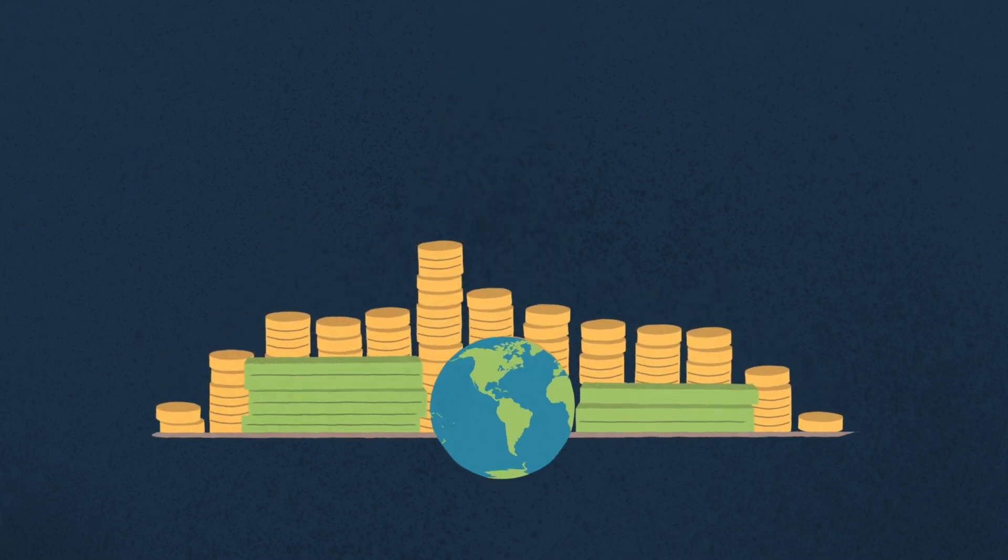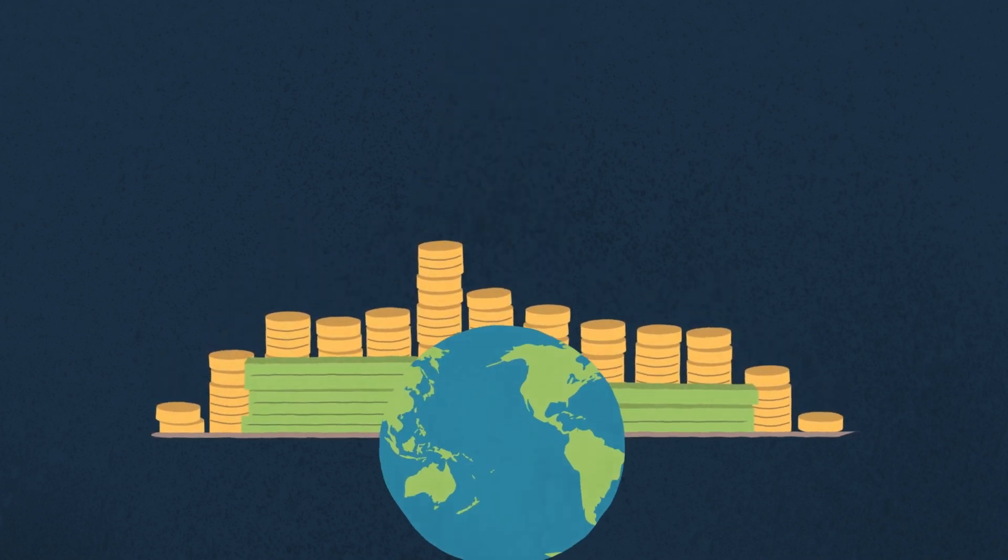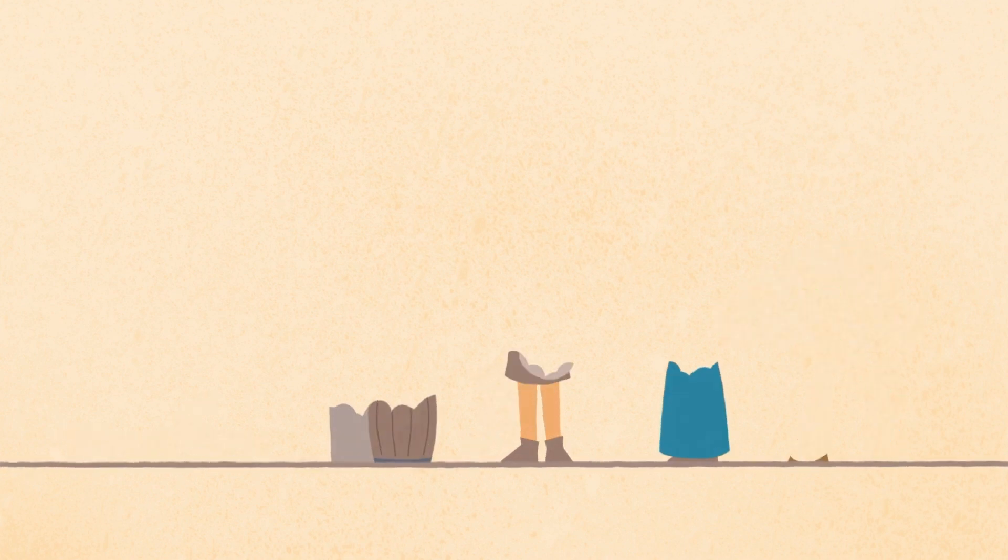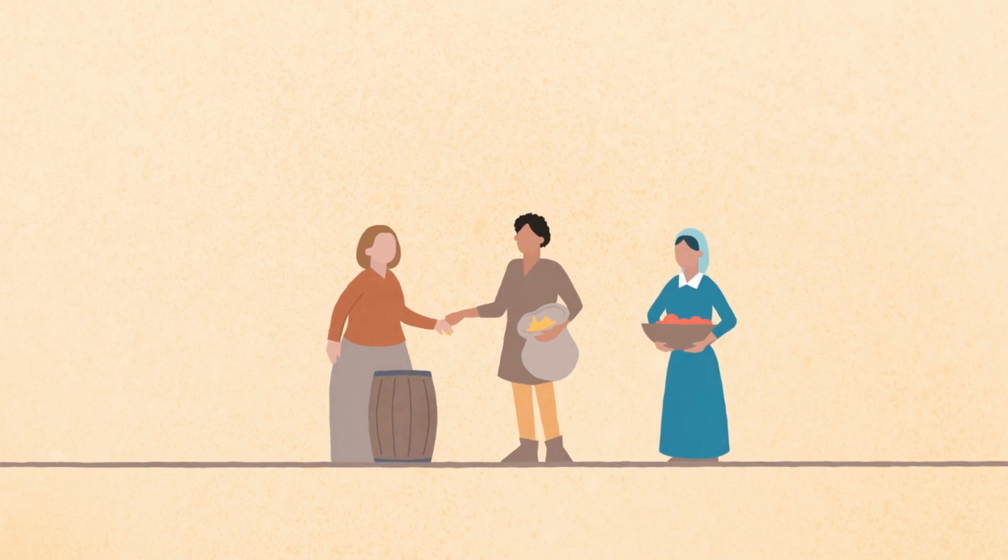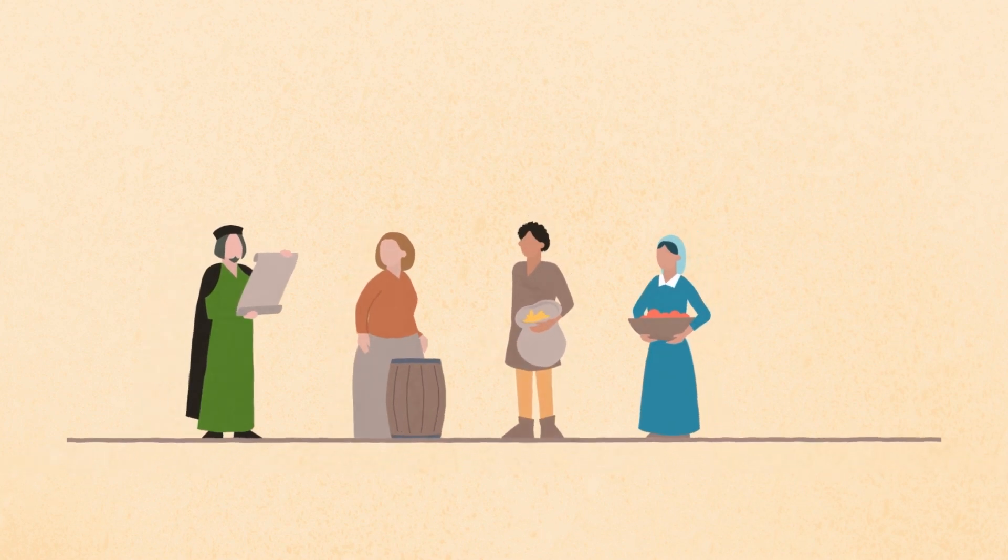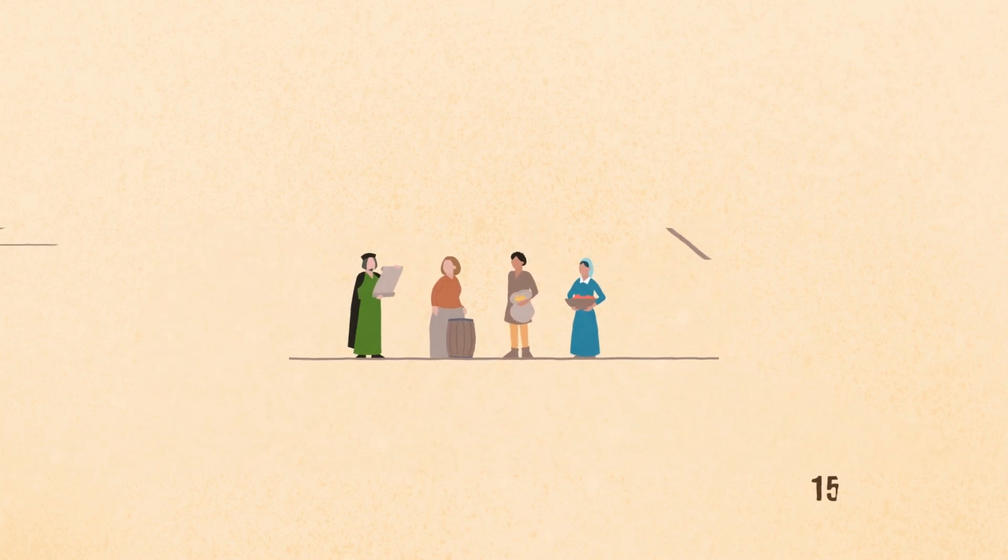Before Africans were enslaved, people around the world lived off common lands and created their own subsistence by cooperating with each other and nature. Because a life organized around money didn't make sense to people, they had to be forced to stop cooperating and take jobs.